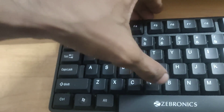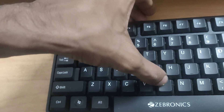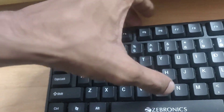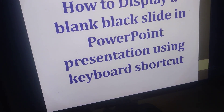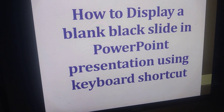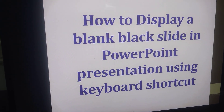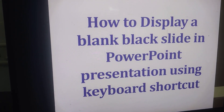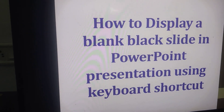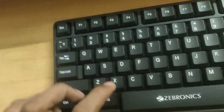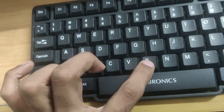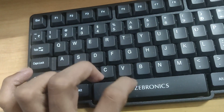And if you press the B key once again, then you go back to the slide. So if you want to display a blank black slide in a PowerPoint presentation, you must simply press the B key while you're running your PowerPoint presentation.